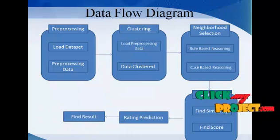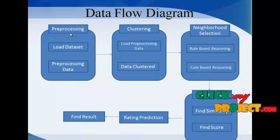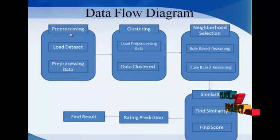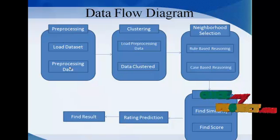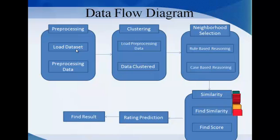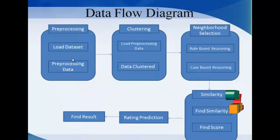Now going to explain the data flow diagram. In our project, the first process is pre-processing. Pre-processing means that irrelevant, redundant, noisy, or unreliable data will be eliminated. First, we load all datasets involved in our project, then combine all datasets into the pre-processing stage.